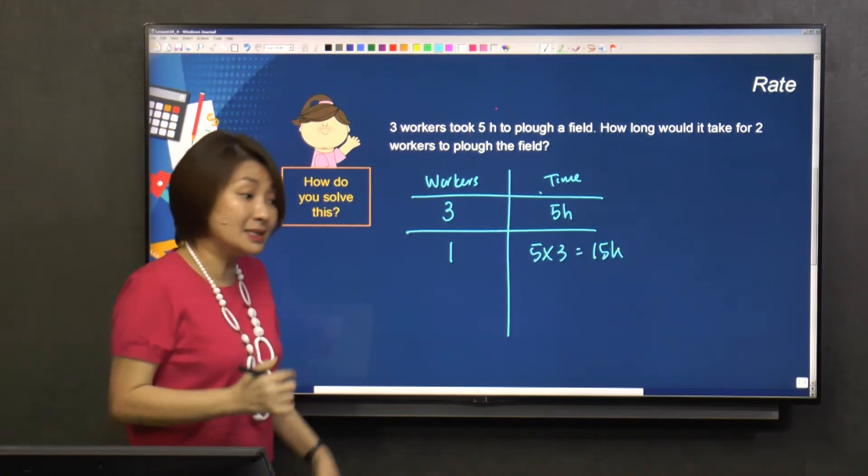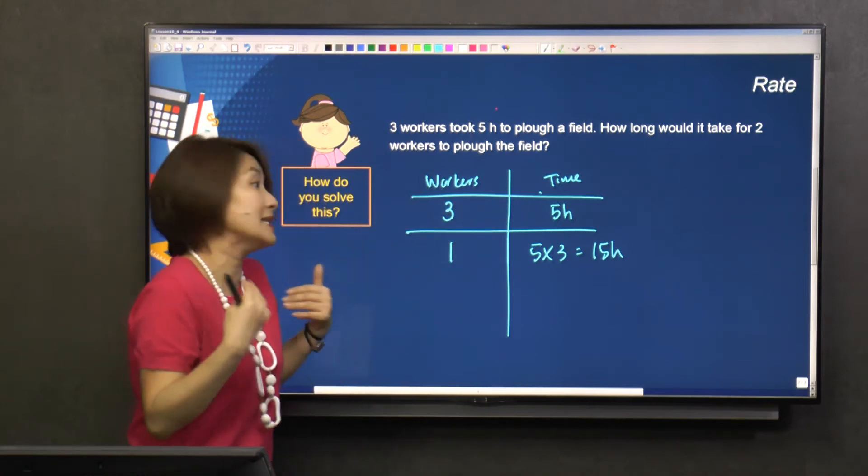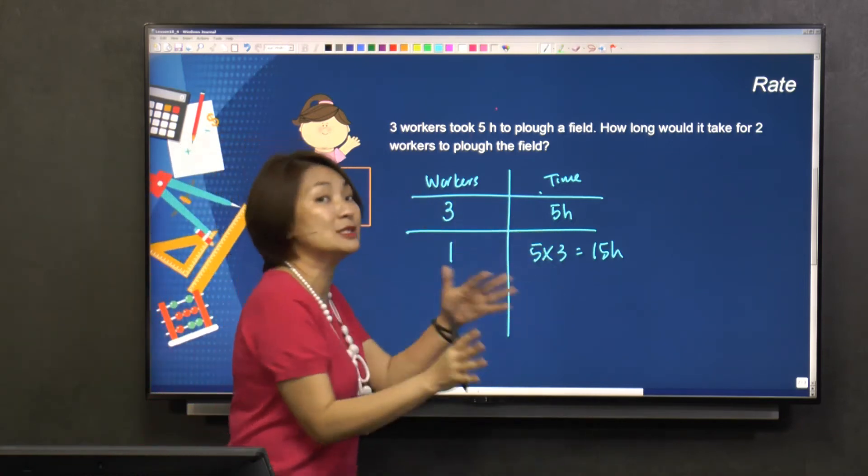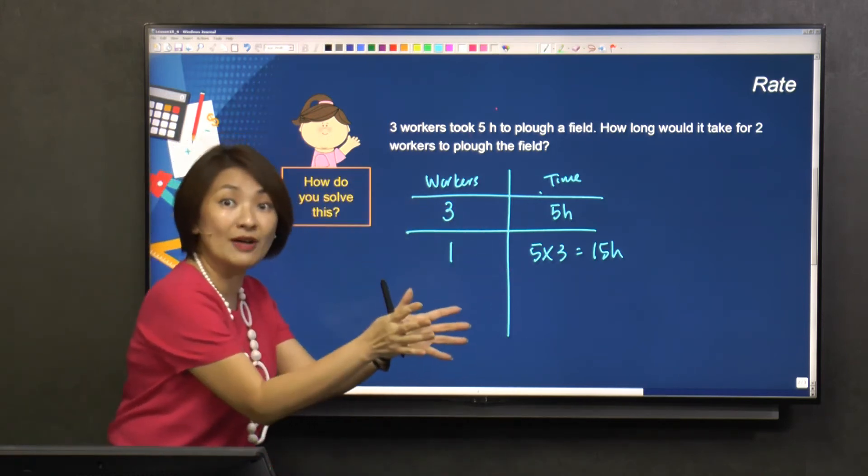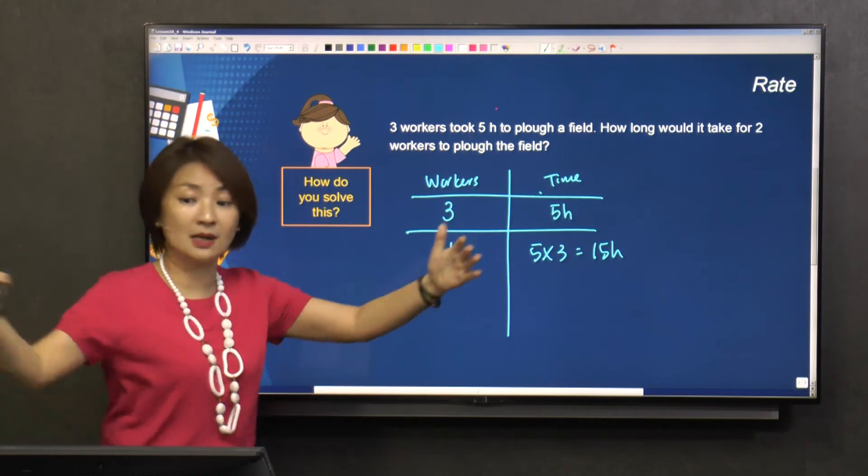You see that? Because he's doing it for worker A, for B, and for C. He's doing it for himself and the other two. So A took five hours, B took five hours, C took five hours, right? Because you can share the field.